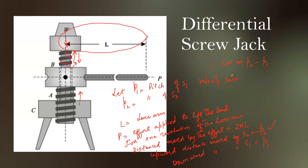The velocity ratio is defined as the distance moved by the effort, which is 2πL, divided by the distance moved by the load, which is the difference in pitches (p2 minus p1). Mechanical advantage is W divided by P, and efficiency is defined as mechanical advantage divided by velocity ratio. The key feature of the differential screw jack is its two sets of screws: as S2 moves up, S1 comes down, and that is how the screw jack works.